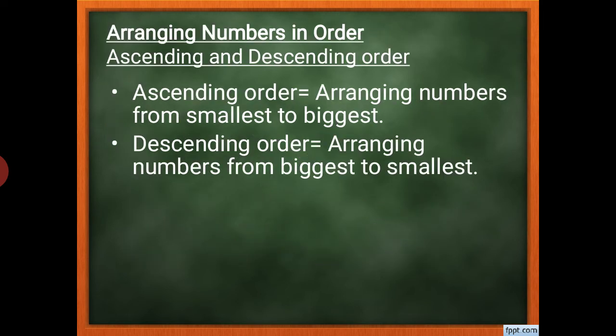Next is S2 — arranging numbers in order. There are two ways: ascending order and descending order. Ascending order means arranging numbers from smallest to biggest. Descending order is the opposite — arranging numbers from biggest to smallest.